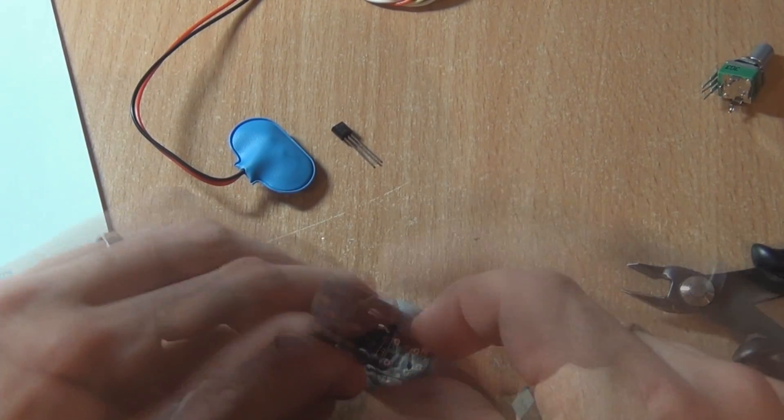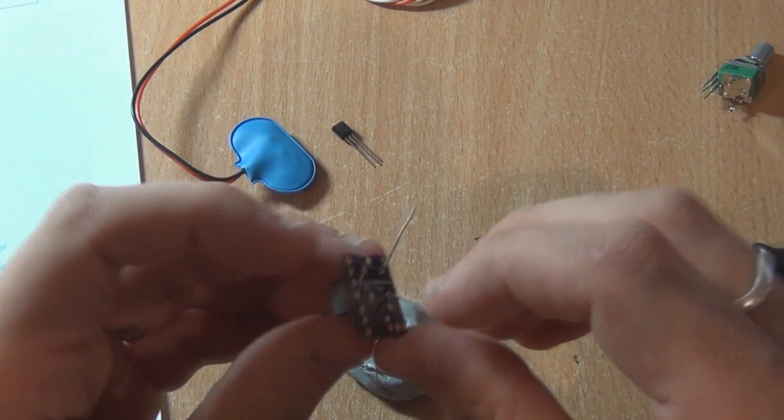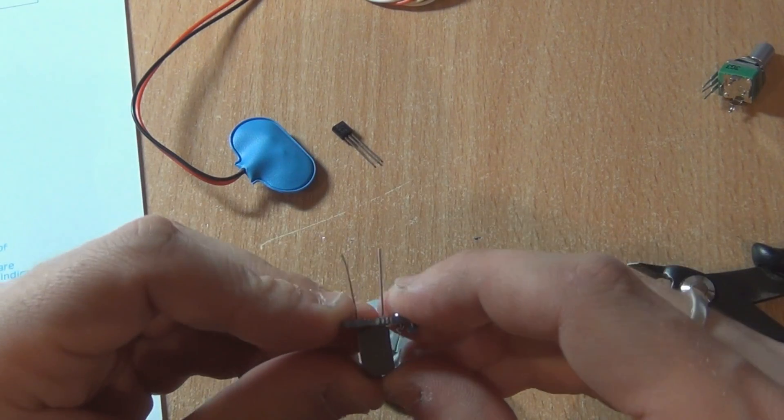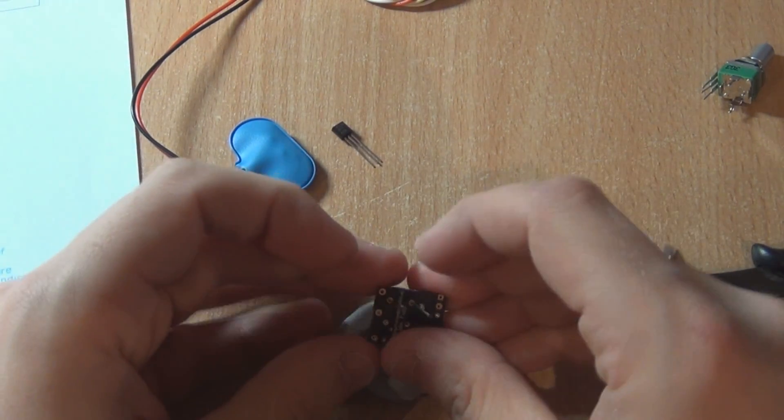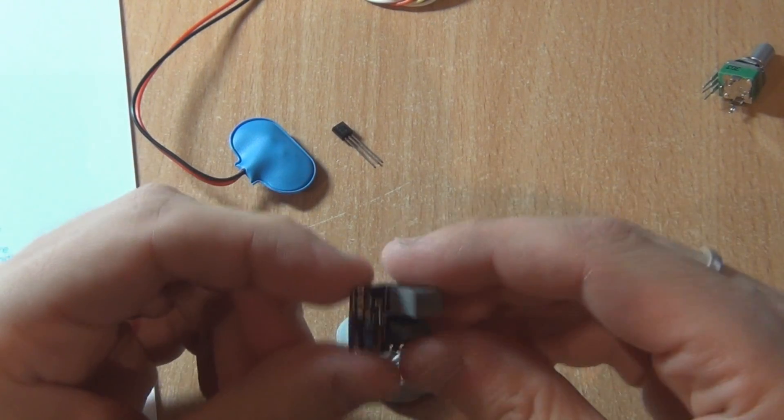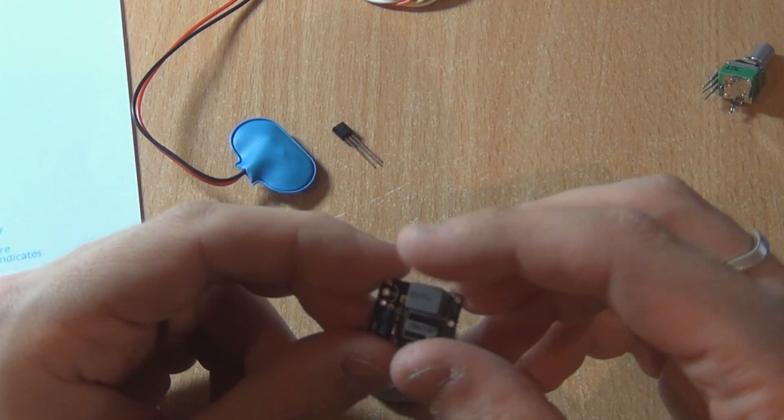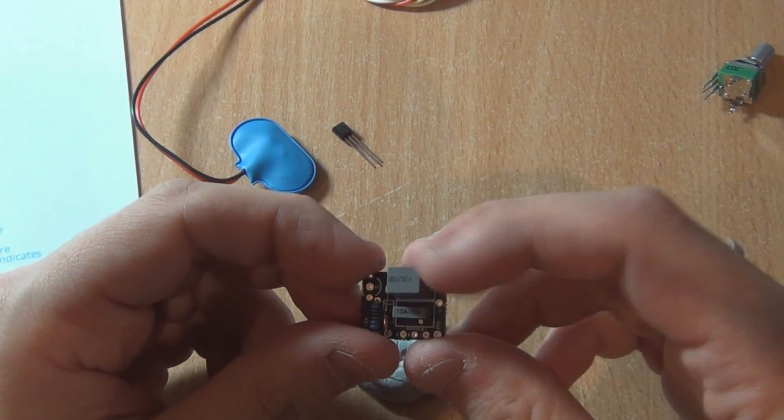So the big one, one microfarad, is going into C1. So just push it all the way into the socket. Don't bend the leads down like that. It's not good practice. That's how you can get solder bridges on the pads. So I've gone ahead and also soldered in the 100 nanofarad capacitor as well, because it's pretty much the same thing. Again, just make sure you put them in the right spot.